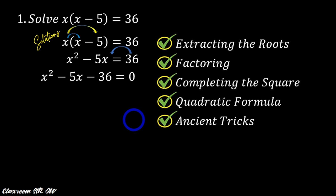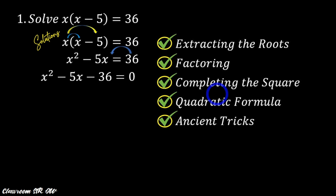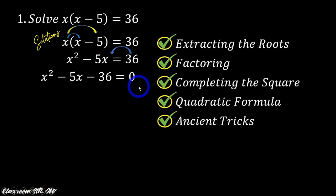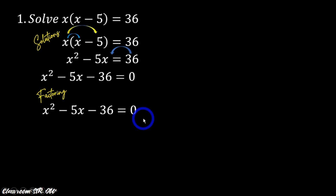Actually there are five ways for us to solve this — we have discussed this already in our previous session. But if you have not watched or been able to understand the concepts yet, there is actually a link at the top of our video here. You can click this one first, watch those topics, and just come back to this tutorial. Now since the coefficient of x squared is 1, we could use factoring.